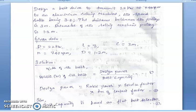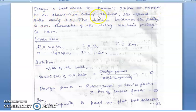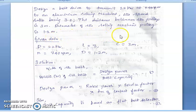In this video, I am going to discuss how to solve problems on the design of flat belts. Let us see a problem: design a belt drive to transmit 22 kW at 740 rpm to an aluminum rolling machine, the speed ratio being 3.0, the distance between the pulleys is 3 meters, and the diameter of the rolling machine pulley is 1.2 meters.